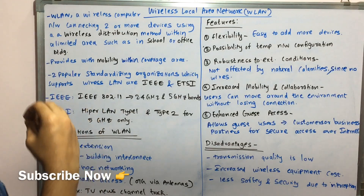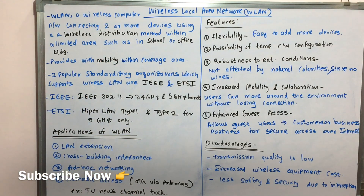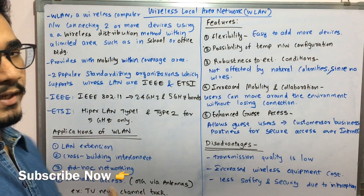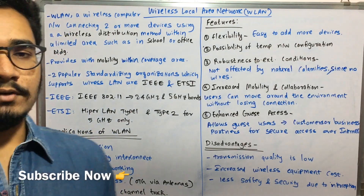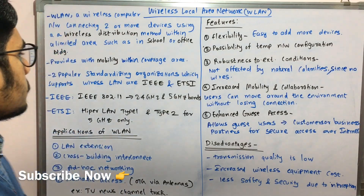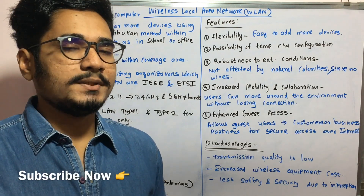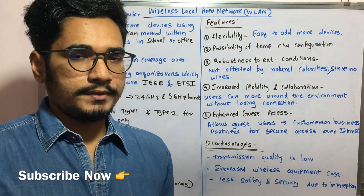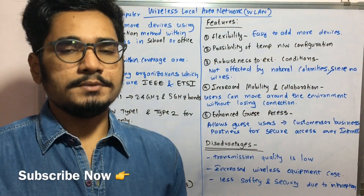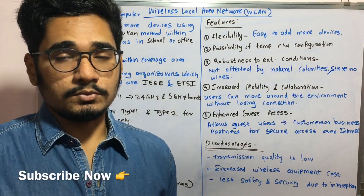WLAN is a wireless computer network connecting two or more devices using a wireless distribution method within a limited area such as a school or office building. You can set up a WLAN in a school, office building, college, or other places. It provides mobility within a particular coverage area. A standard LAN has coverage within a certain few kilometers, but with WLAN you can improve that coverage since it's wireless and can pass through all media.